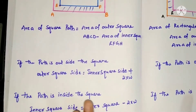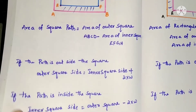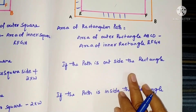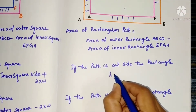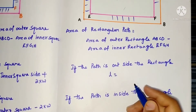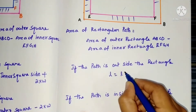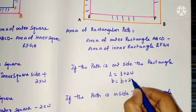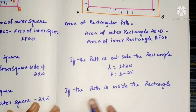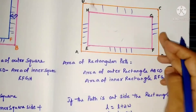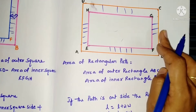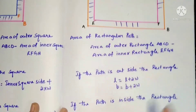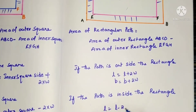Similarly in the rectangular case: if the path is outside, the new length = L + 2W and the new breadth = B + 2W. If the path is inside the rectangle and we know the outer length and want to calculate the inner rectangle dimensions, then inner length = L minus 2W, and inner breadth = B minus 2W.